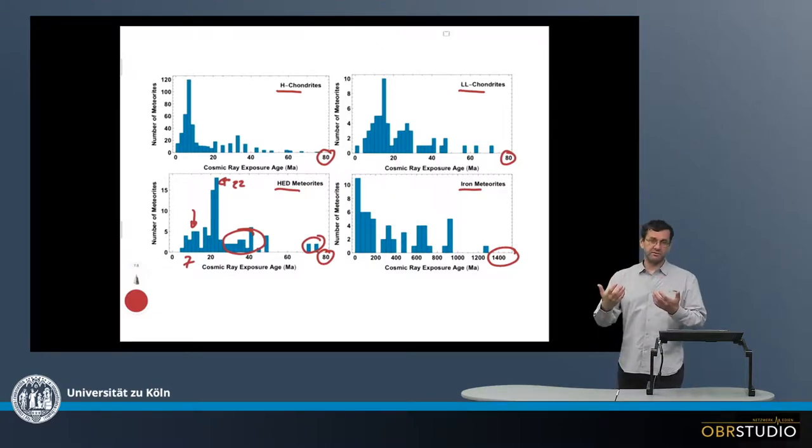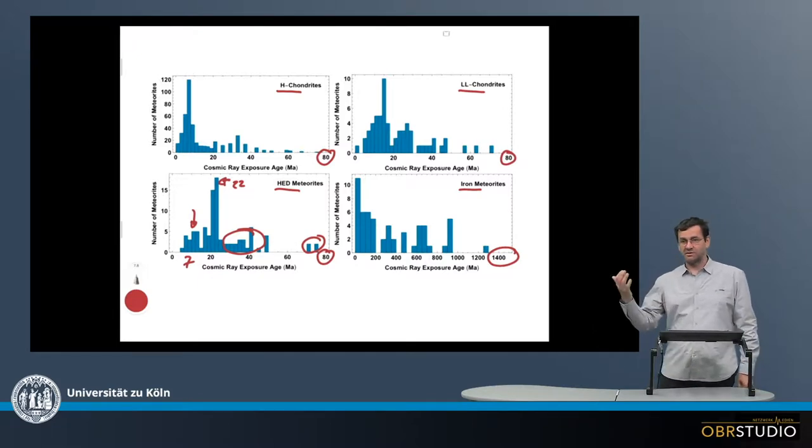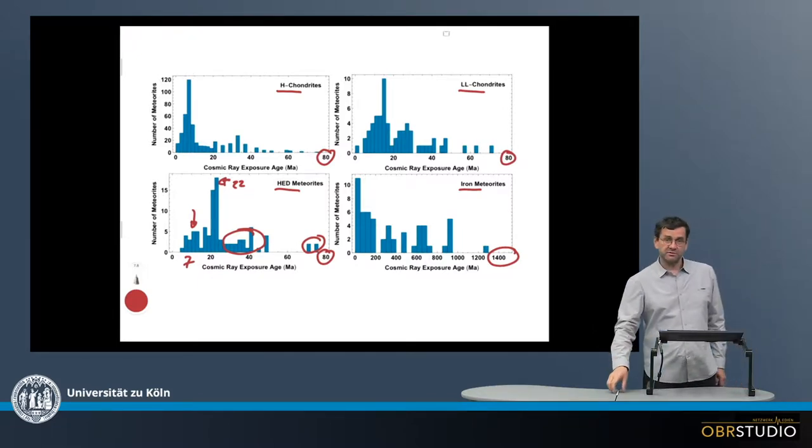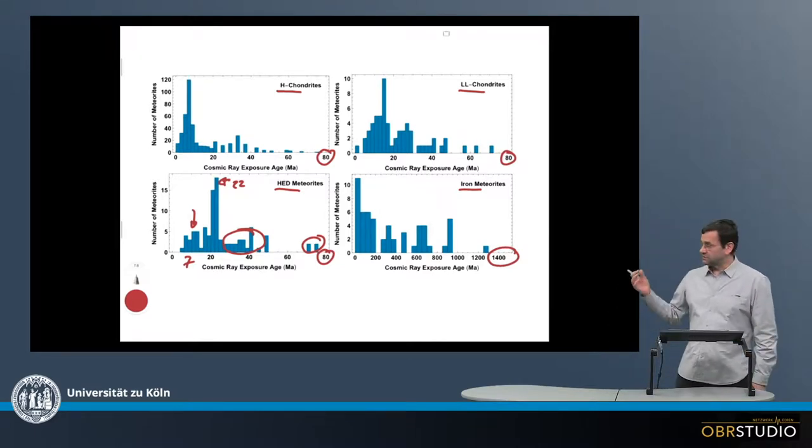And these larger impacts produced many meteorites that traveled to Earth and took about the same time because they have about similar trajectories and came to Earth.